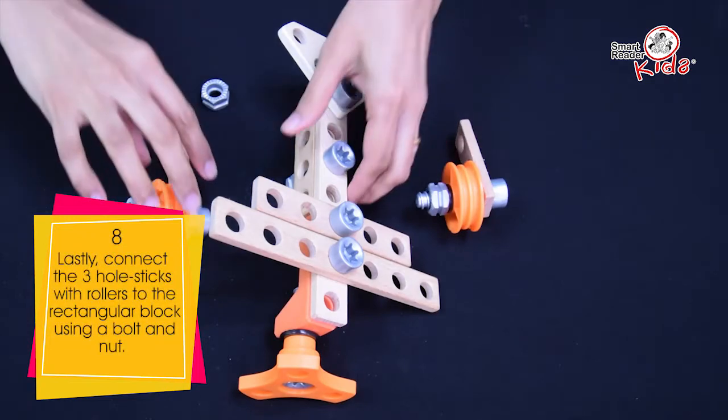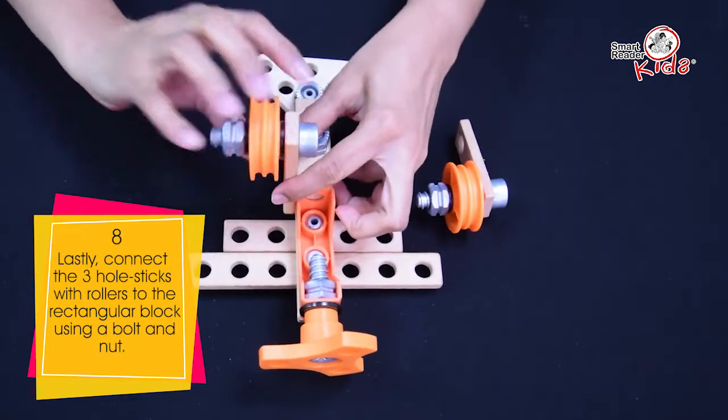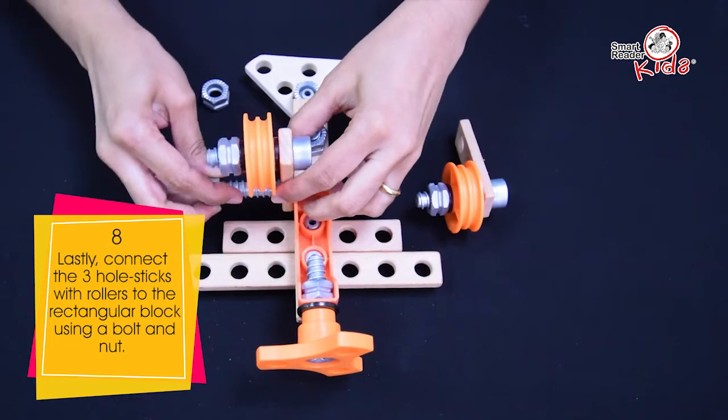Lastly, connect 3-hole sticks with rollers to rectangular block using a bolt and nut.